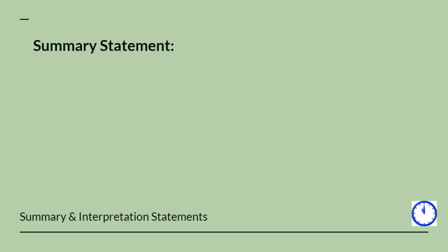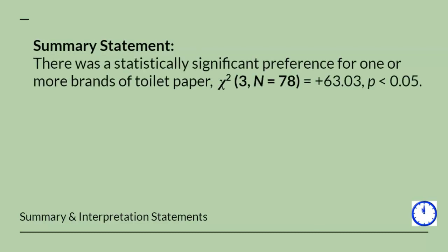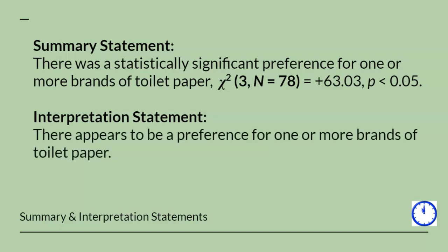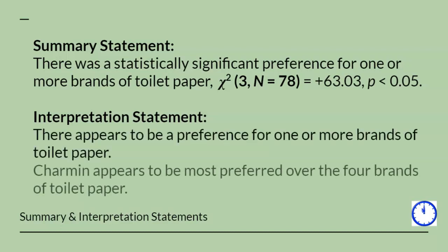The summary statement will now consist of only one sentence. This sentence will report the chi-square score, degrees of freedom, the sample size n included in the parentheses, significance level used, and the decision you made. The interpretation statement will consist of only two sentences, since we did not calculate effect size. The first two sentences will come from the initial interpretation you determined after calculating the chi-square for goodness of fit in the Nearpod lesson. The first sentence will explain the preference, and the second sentence will be more specific and explain which brand is most preferred.